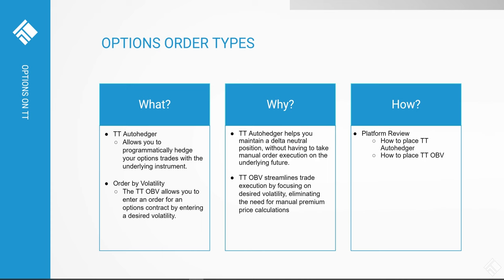TT Auto Hedger allows traders to programmatically hedge their options trades with the underlying instrument. When the options order fills, TT Auto Hedger uses the total delta of the executed options trade to calculate an order quantity for the underlying instrument. If the delta is positive, a sell order is submitted; if negative, a buy order is submitted; if delta is zero, no hedge order is submitted.